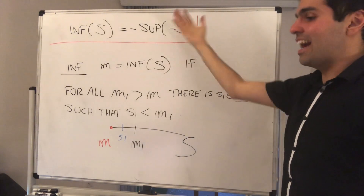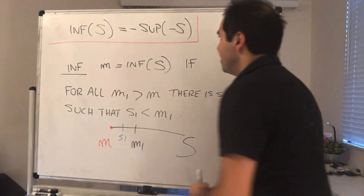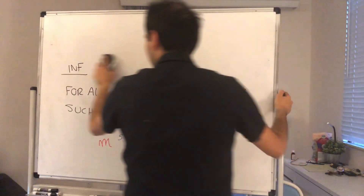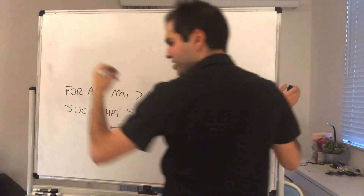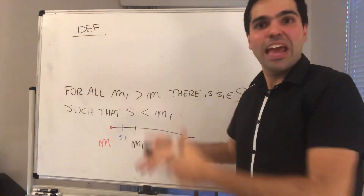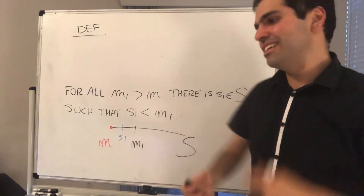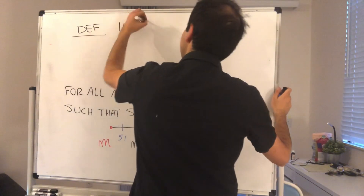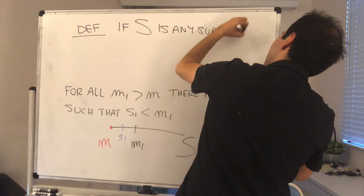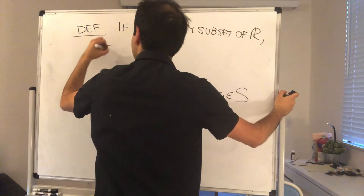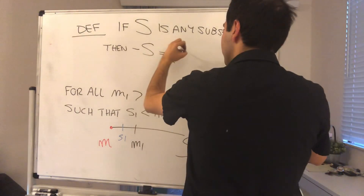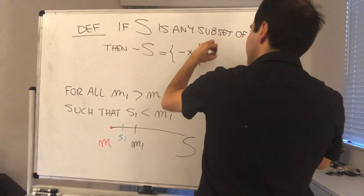We want to show that the infimum exists, and it turns out there's this absolutely beautiful identity that relates the infimum with the supremum. For this, let me define what minus S is. If S is any subset of R, then minus S is just the set of minus x, where x is in S.